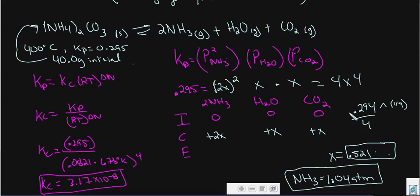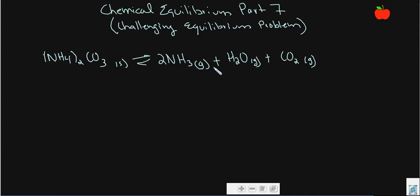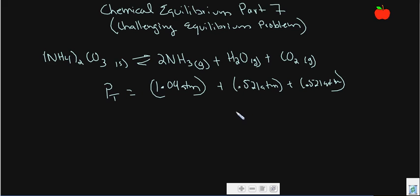That could also lead us to answering another question. What is the total pressure inside the flask? Well, we found from previous calculations that this one was 1.04 atms, and this one was 0.521 atms, and this one is 0.521 atms as well. Add those all up and we get total pressure, because the total pressure equals the addition of all the partial pressures. Once we add those all up, we find that the total pressure equals 2.08 atms. That's the total pressure of this system.